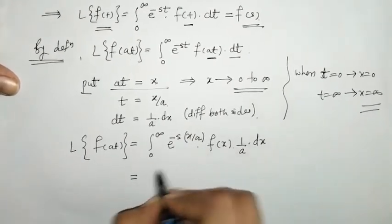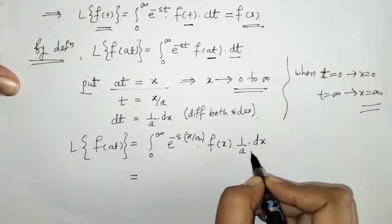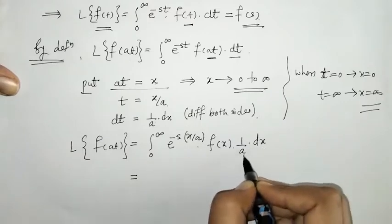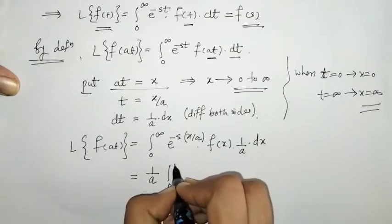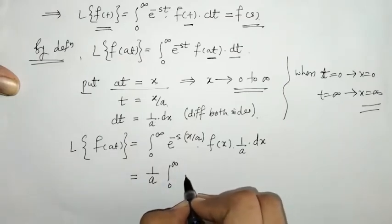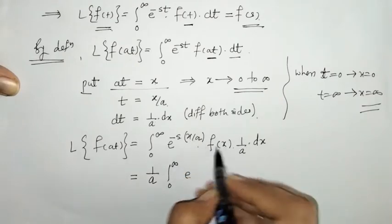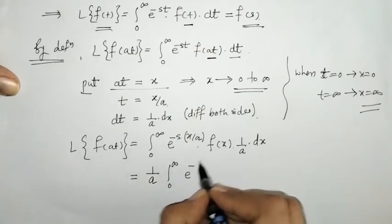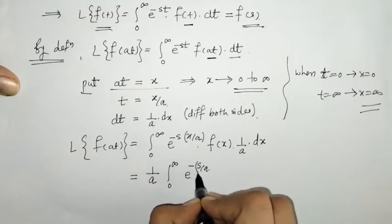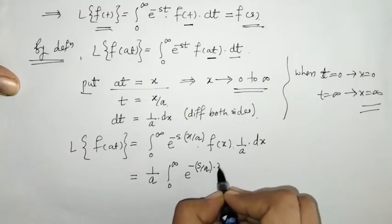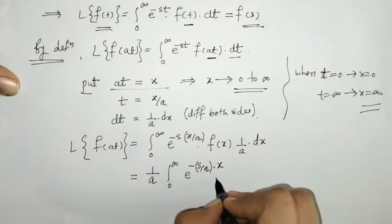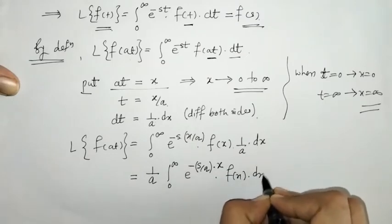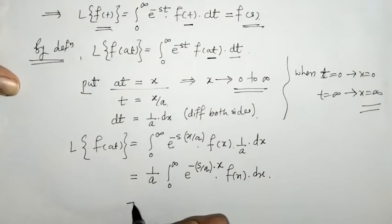Since a is a constant, we take (1/a) outside the integral. The exponent becomes −(s/a)·x, so we have (1/a) times the integral from 0 to infinity of e^(−(s/a)x) f(x) dx.